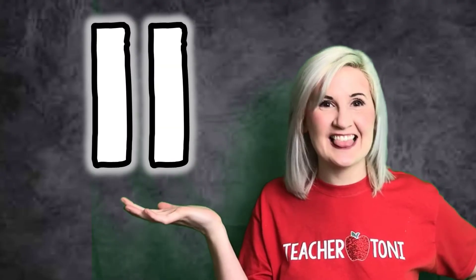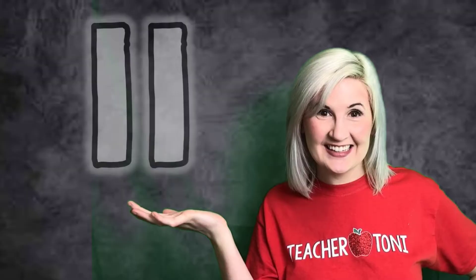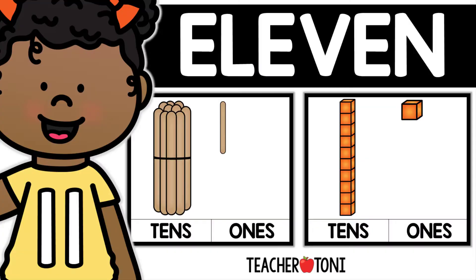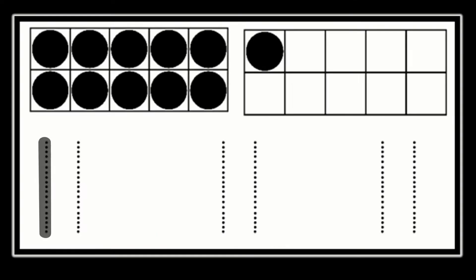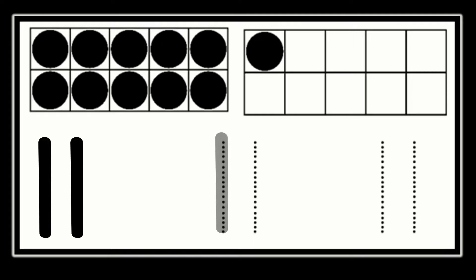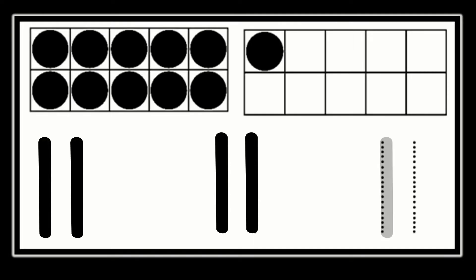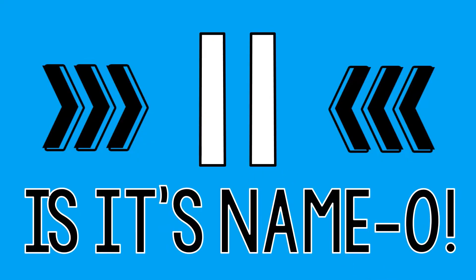Here's 11. I can write a teen number. 11 is its name. Oh, 1, 1, 1, 1, 1, 1. 11 is its name.